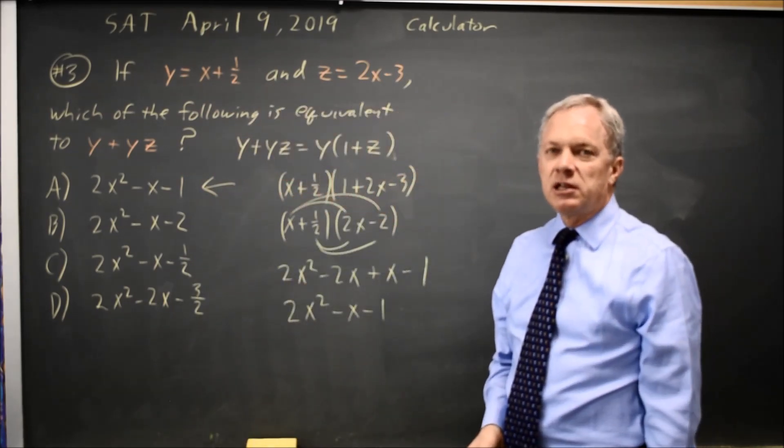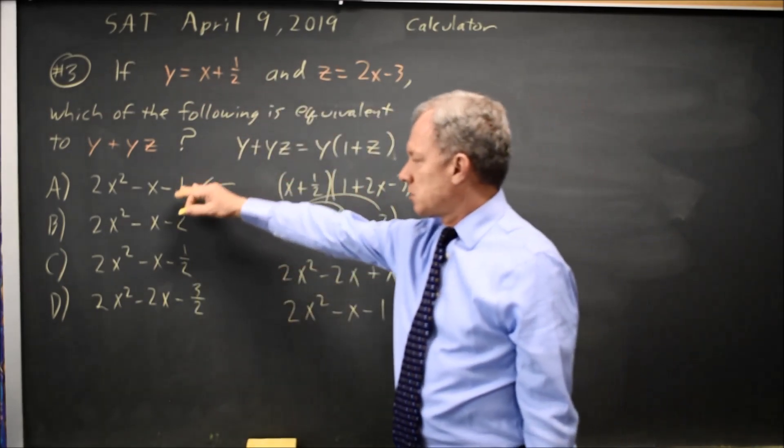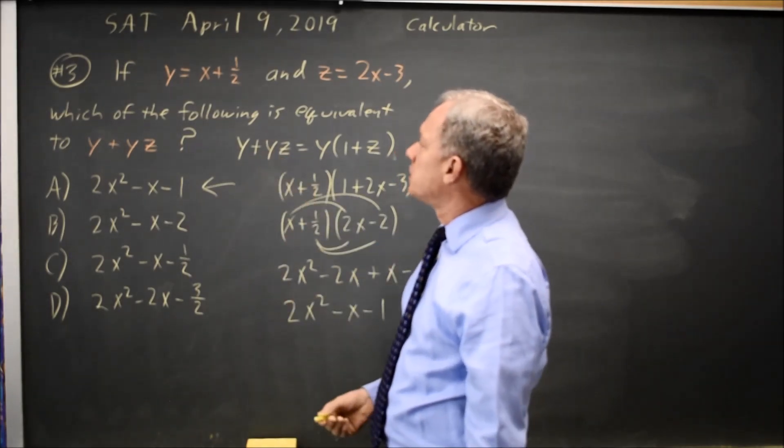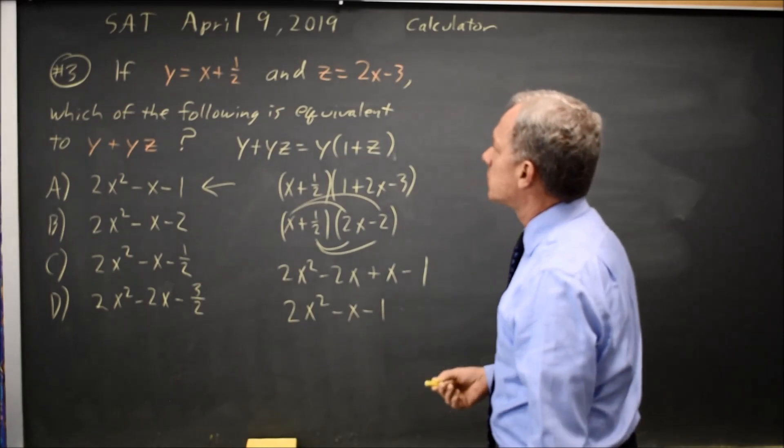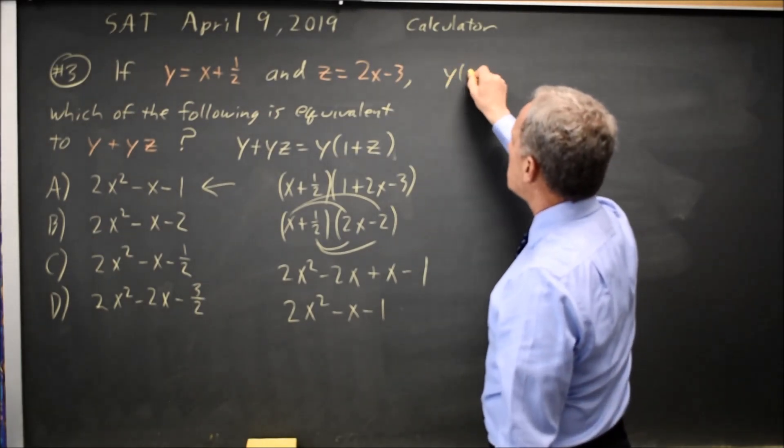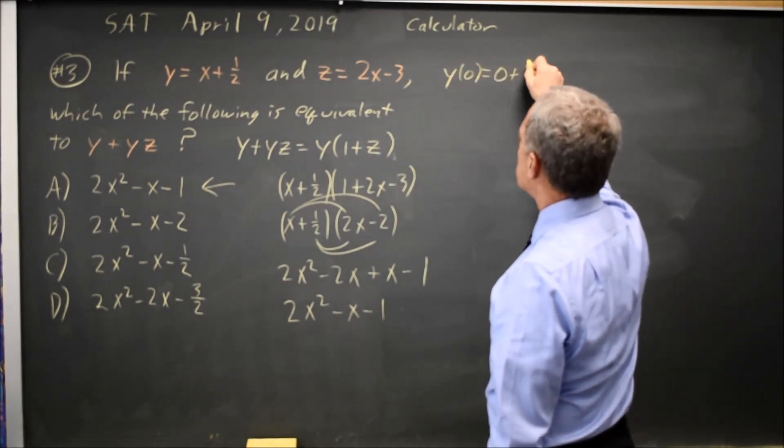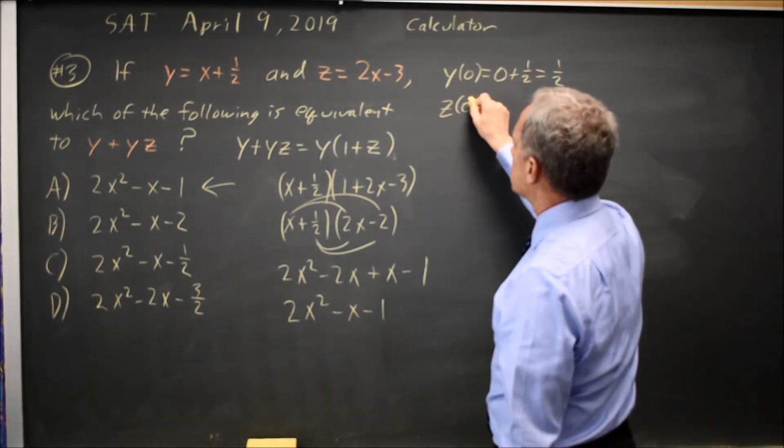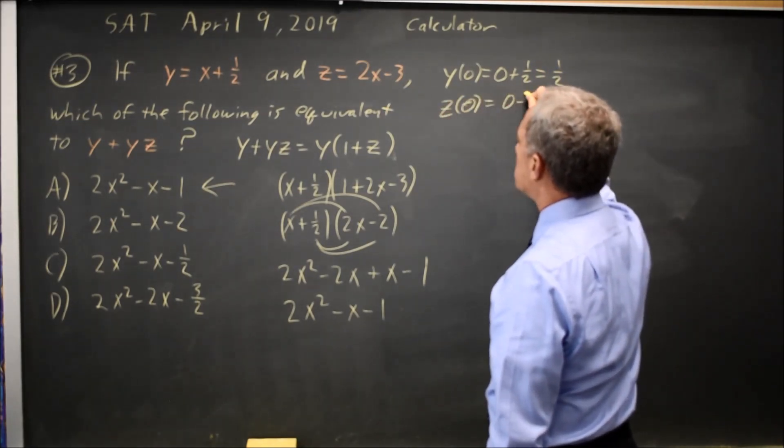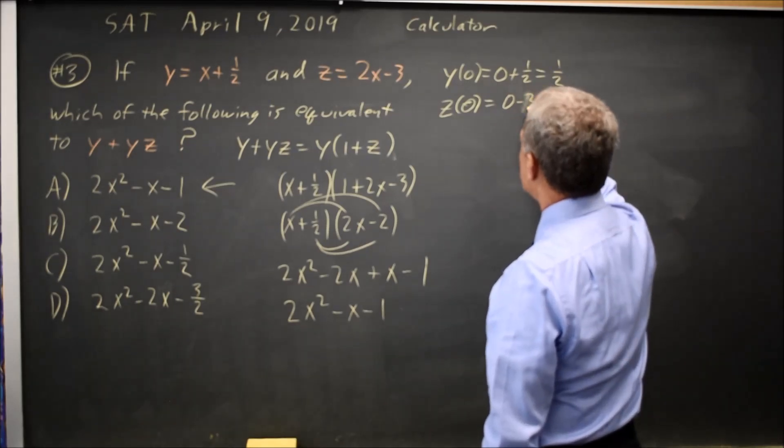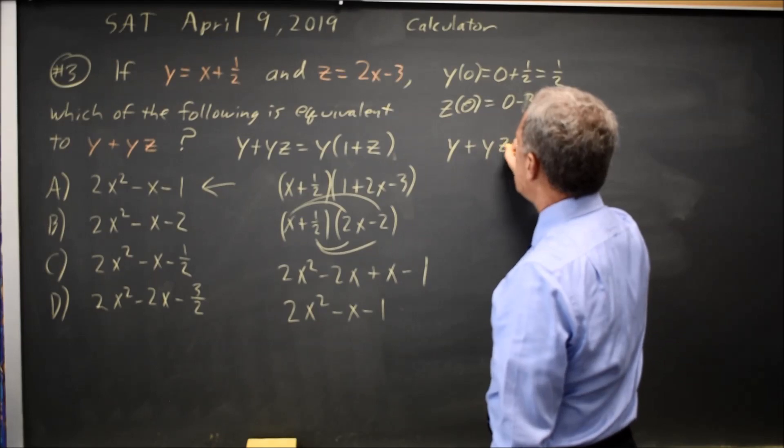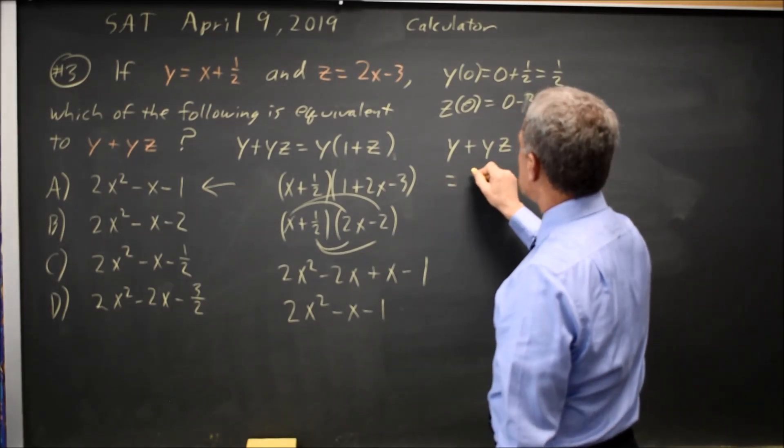Alternatively, if we notice that these all have different constants, we can evaluate y plus yz when x equals 0. So y of 0 equals 0 plus 1 half equals 1 half, z of 0 equals 0 minus 3 equals negative 3. So y plus yz equals 1 half.